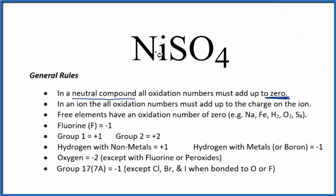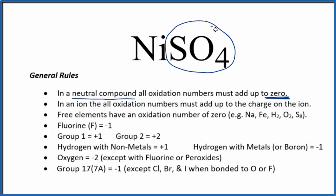For nickel, this is a transition metal — it can have different oxidation states, so we really need to look at what it's bonded to. In this case, it's bonded to the SO₄. This is the sulfate ion, and the sulfate ion is one you should recognize: it always has a 2-minus ionic charge.